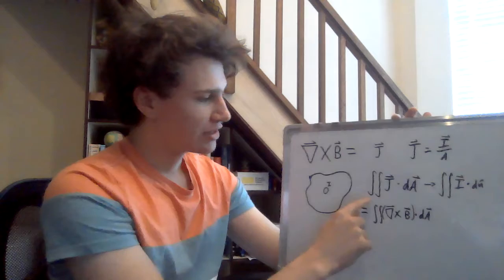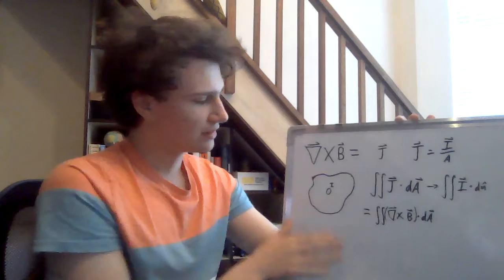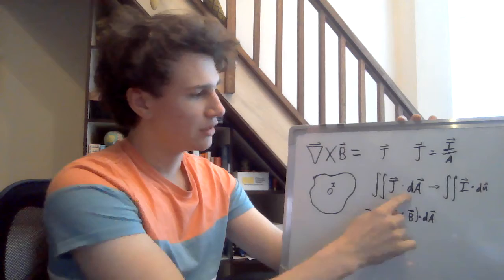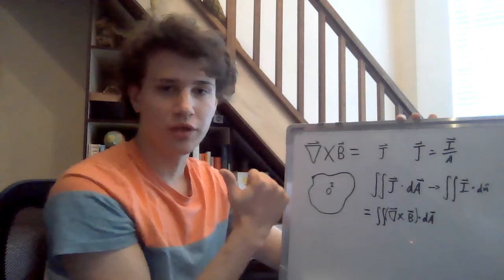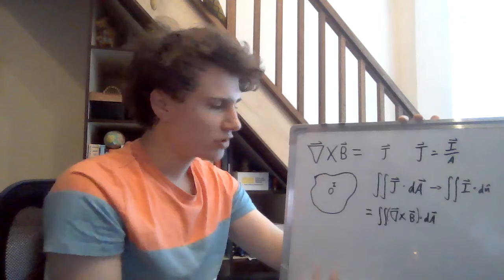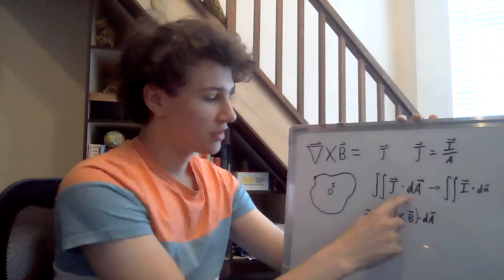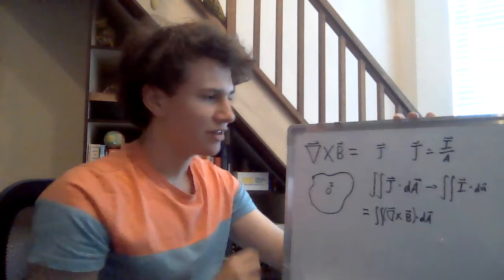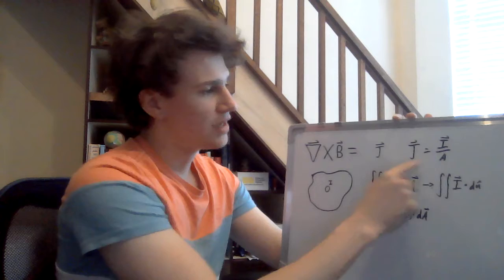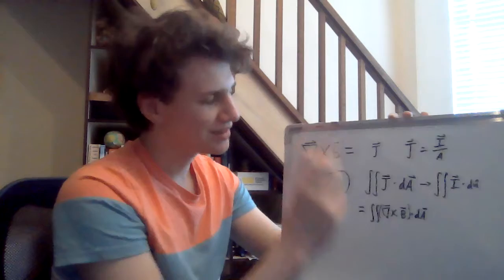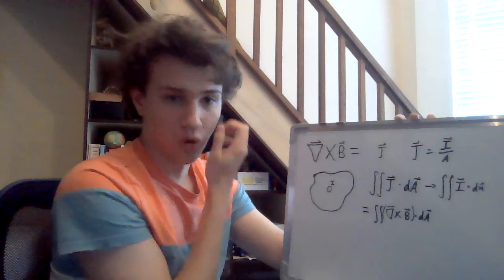So we're going to have a double integral, and we're going to try to get rid of that over this entire thing. Through an arbitrary surface of the current density dotted with the area element — that's just the way, since we only want the current that's going through the surface. If it's going parallel to the surface, the current's not really going through. We're not interested in that, so that's why it's the dot product — only that which goes through the surface, dotted with the area.